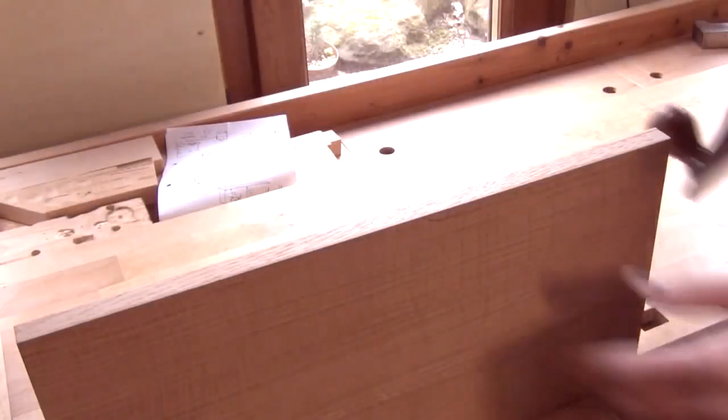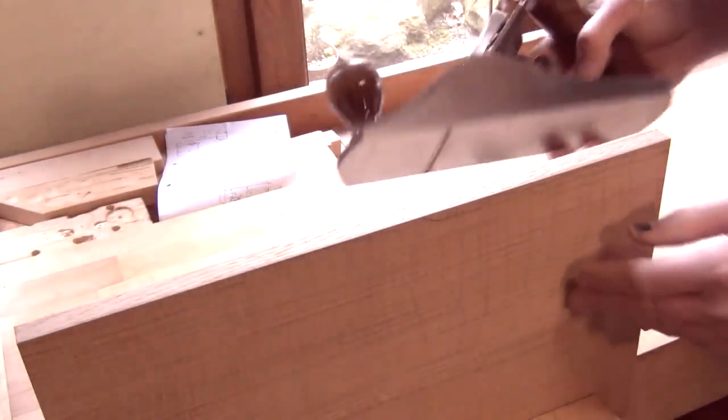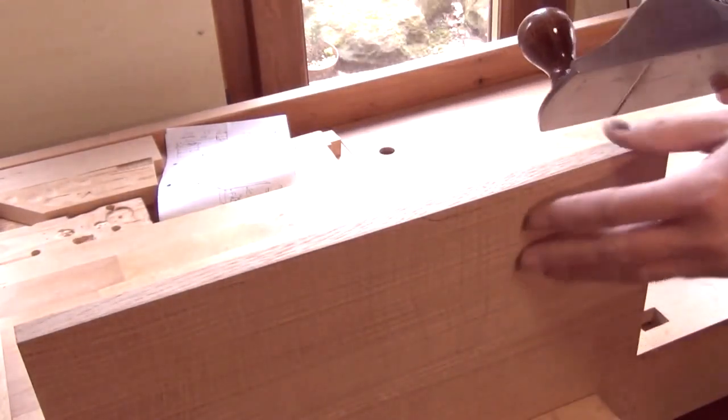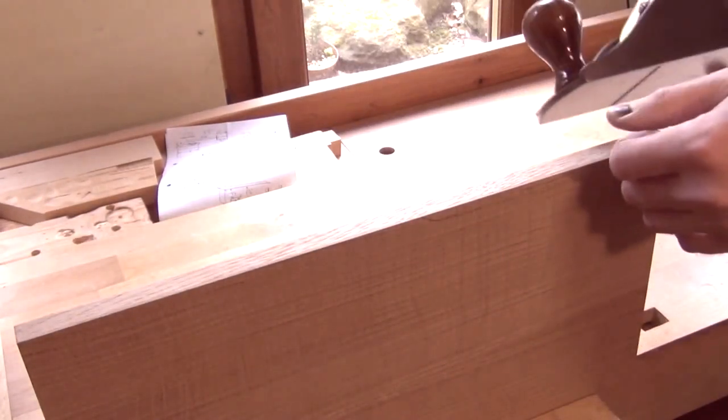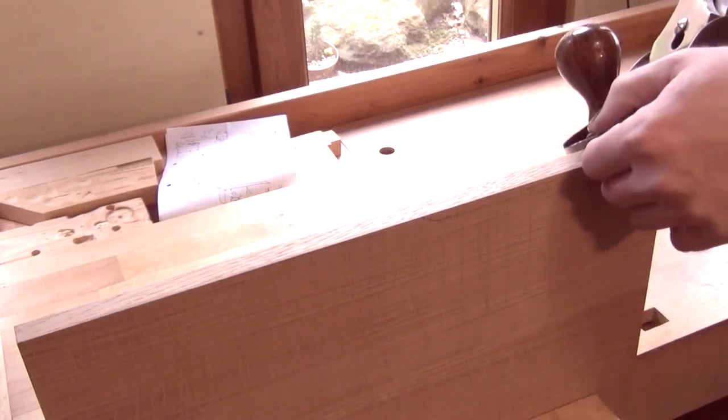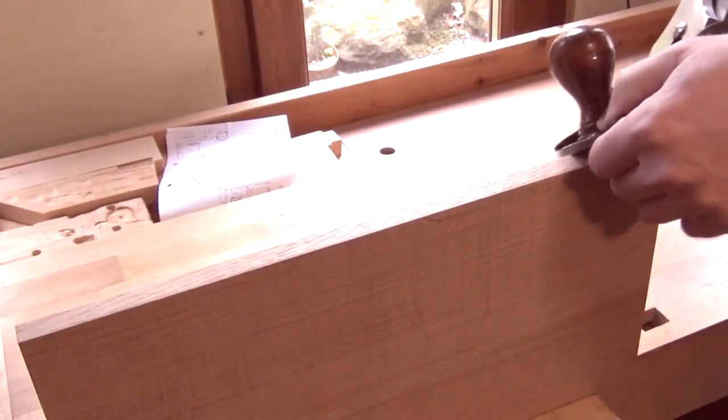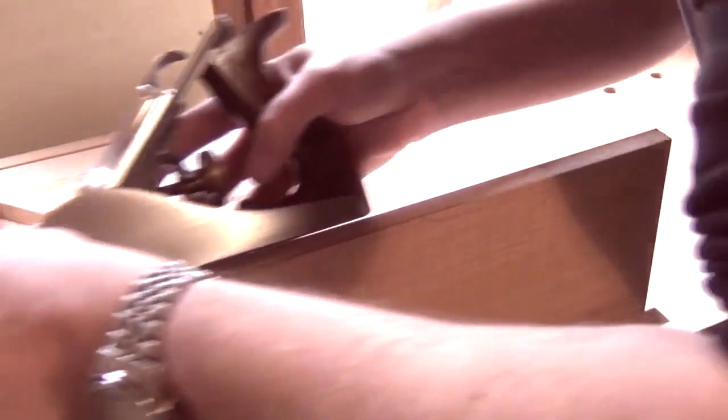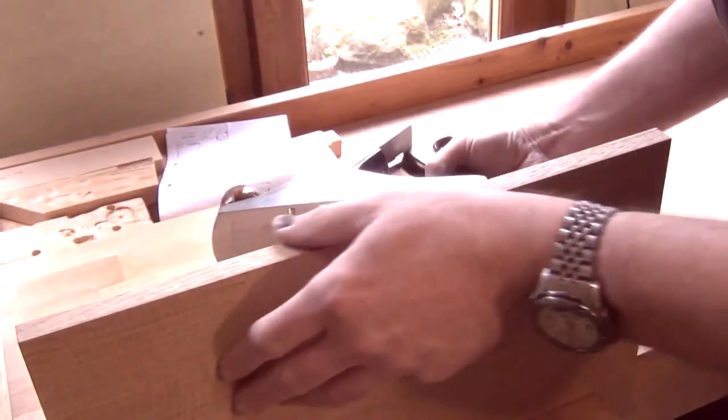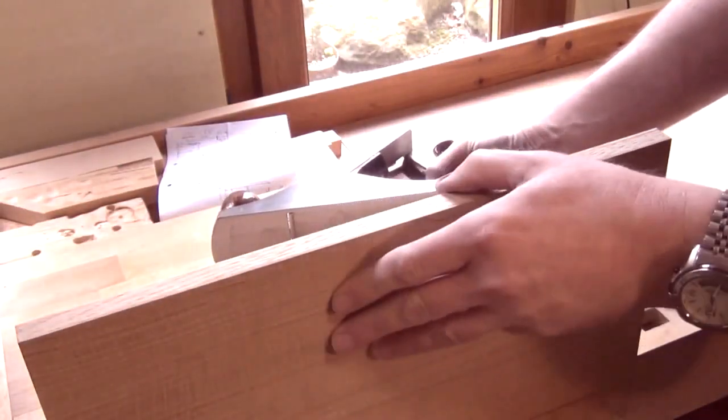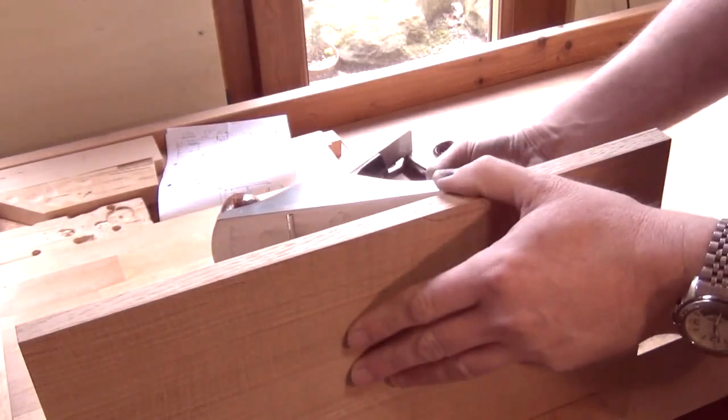For those edges that just want a fine bevel I'll use a smoothing plane held at 45 degrees set very fine. Count the strokes I'm taking until I get the sort of bevel I want and then repeat that number of strokes on all the other edges that I want.